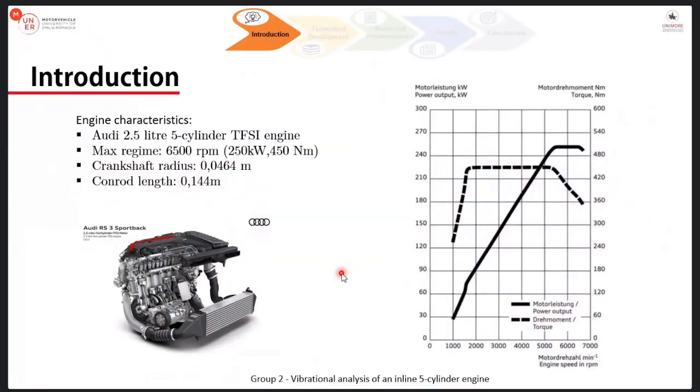The first thing we were asked to do was to develop a suitable model to study the problem. We had to find an existing engine and we found the TFSI engine, for example the engine that keeps the Audi RS3. We use the data sheet of this precise engine and as it can be seen in the slide here we also found the torque and power curve of this precise engine.